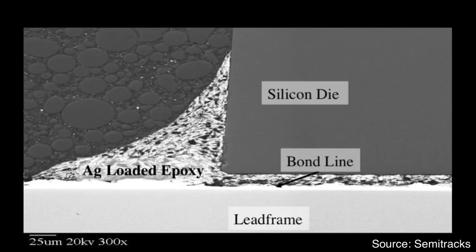Bond line thickness is the thickness of adhesive between substrate and die. It is related with adhesion and reliability performance.